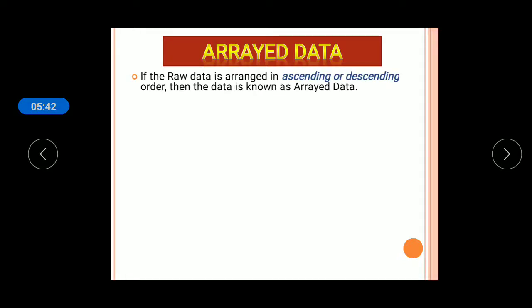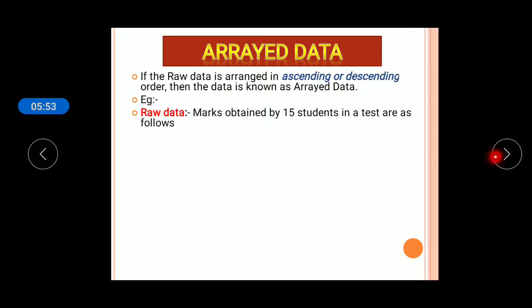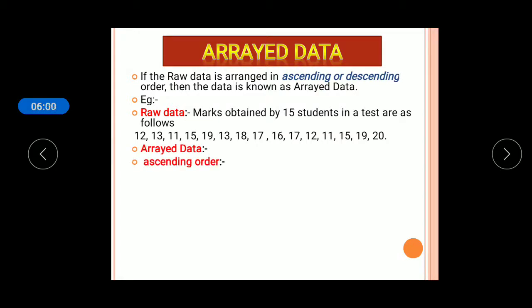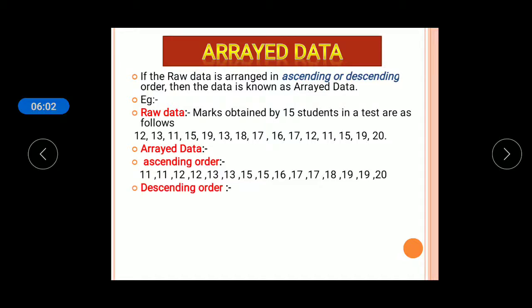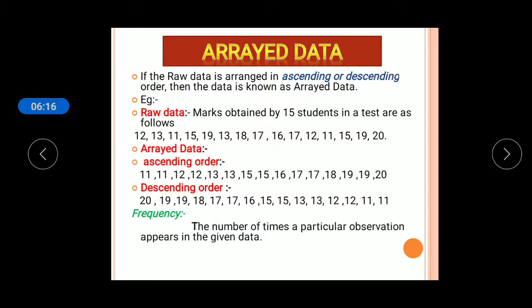Array data is when raw data is arranged in ascending or descending order. Taking the previous data and writing it in ascending order, or in reverse as descending order, gives array data. Frequency is the number of times a particular observation appears in the given data. For example, if 11 is repeated two times, the frequency of 11 is 2.